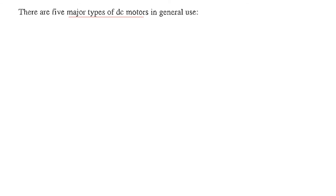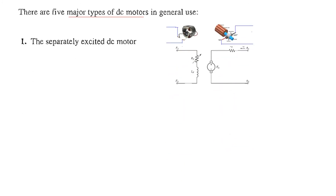There are five major types of DC motors. The first is the separately excited DC motor, where the field coil is connected to a separate DC source or battery, and the armature is provided with a separate source as well. That is why it is called separately excited — the field is provided current or voltage separately.